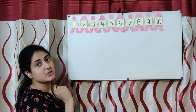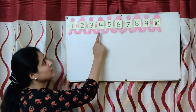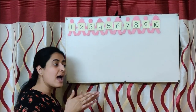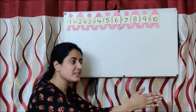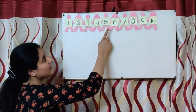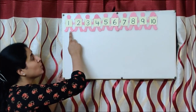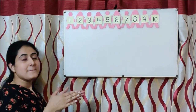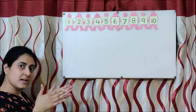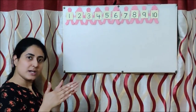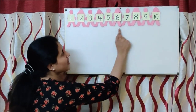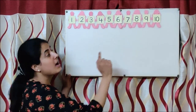And one more thing, children. When we say one, two, three, four, five, six, seven, eight, nine, ten — we are doing forward counting. Forward counting means aage jaana, going forward. And when we do ten, nine, eight, seven, six, five, four, three, two, one — it means piche aana, backward counting. Backward counting means counting from behind. So through this poem, we have also learned how to do forward counting and how to do backward counting.